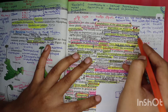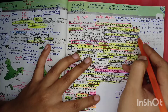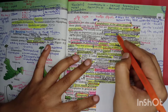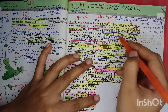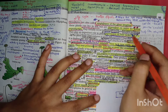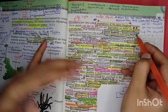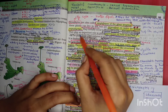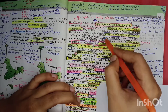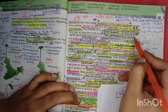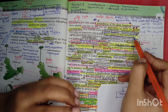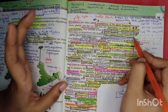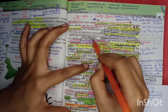Bryophytes usually occur in damp, humid and shady localities - areas with some particular temperature along with moisture, where sunlight does not directly fall on the plants. They play a very important role in the succession of bare rocks, converting rocks into soil by decomposing them.